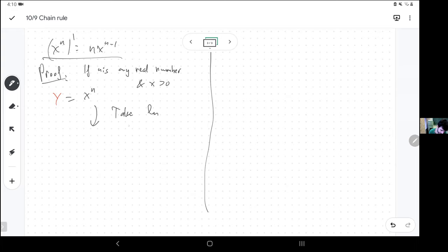Amounts to taking logarithms on both sides and then doing implicit differentiation. So if I take logarithms on both sides, what I get is that the logarithm of y is the logarithm of x to the n.